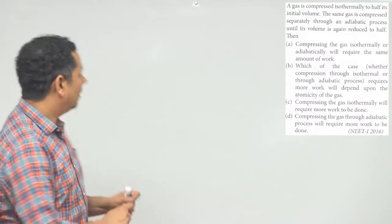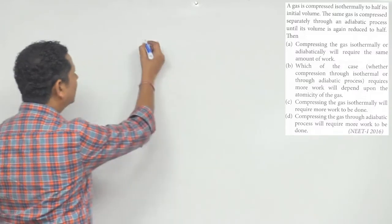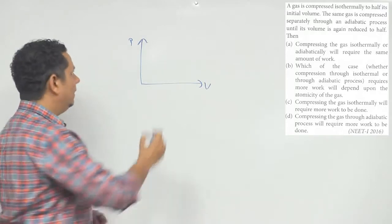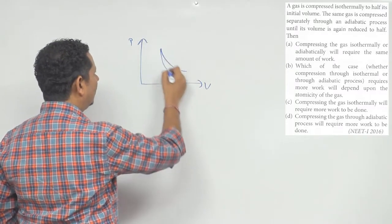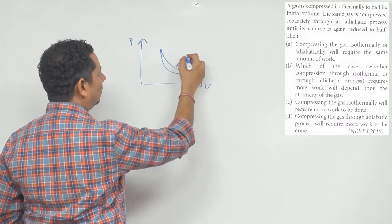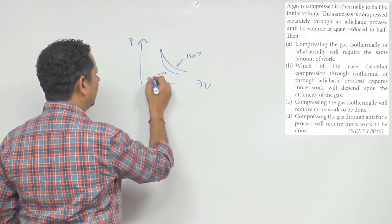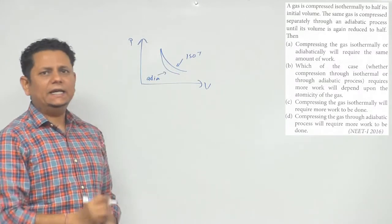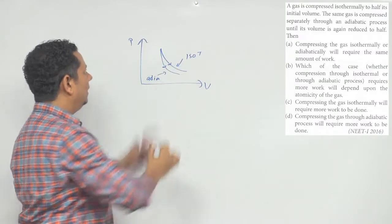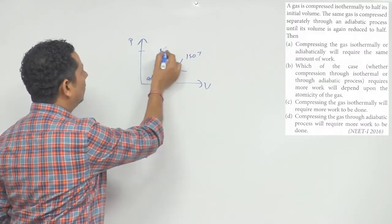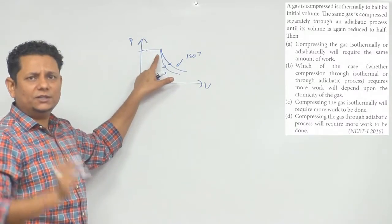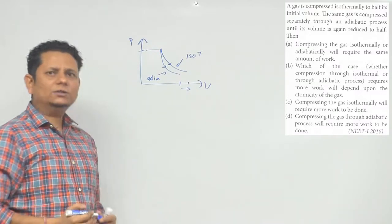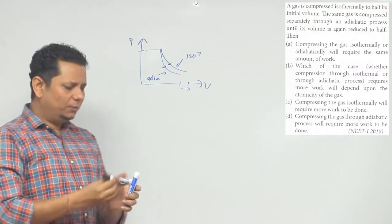इसका solution देखते हैं. यहाँ पे अगर हम PV graph बनाएं — class में जब हम पढ़ते हैं तो adiabatic और isothermal को compare करने के लिए PV graph कुछ इस तरह बनाते हैं: यह P है, volume ऐसे हुआ है, यह process है ISO-T और यह process है adiabatic. लेकिन इस case में हम expansion नहीं कर रहे — यहाँ pressure initially constant था, और हमारे सवाल में volume कम हो रहा है.